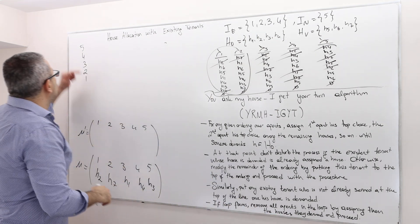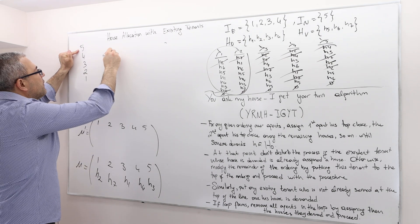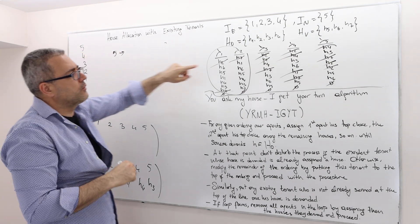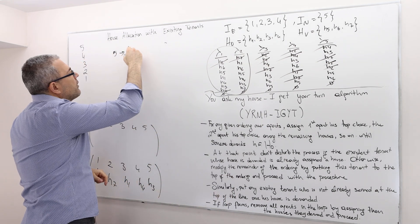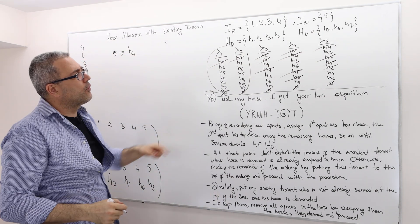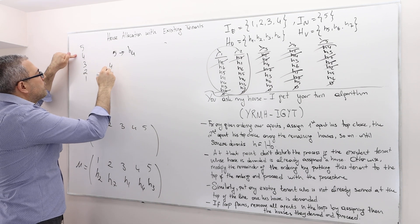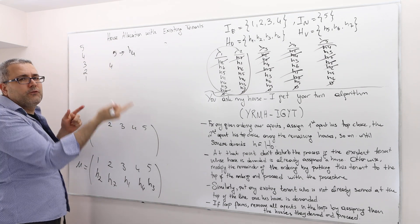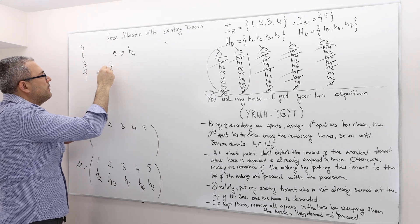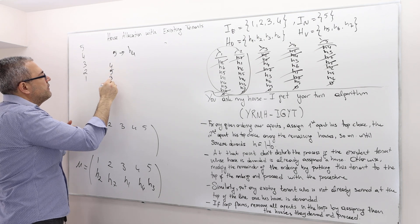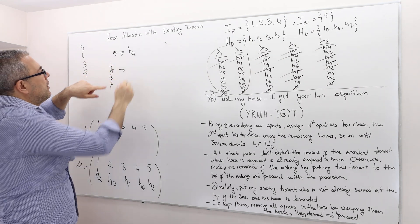We go to agent 5 first. Agent 5 says house 4 is his top choice. Is house 4 occupied? Yes, it is. So we pull agent 4 to the top of the list. Agent 5 becomes second, then 3, 2, 1. We now ask agent 4 what house he wants.